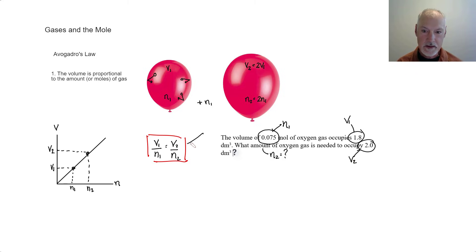Let's put that now into the expression that we have here. So volume one would be 1.8 decimeters cubed, 0.075 moles. That's going to equal volume two, 2.0 decimeters cubed over N2. Cross multiplying and isolating for N2, we should get 2.0 decimeters cubed over 1.8 decimeters cubed times 0.075 moles. The units will cancel and to two significant digits, I'll get 0.083 mole.